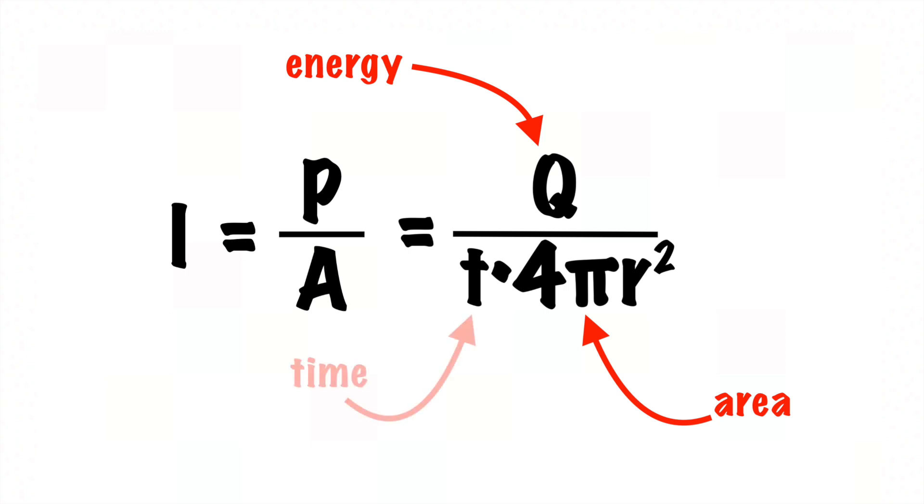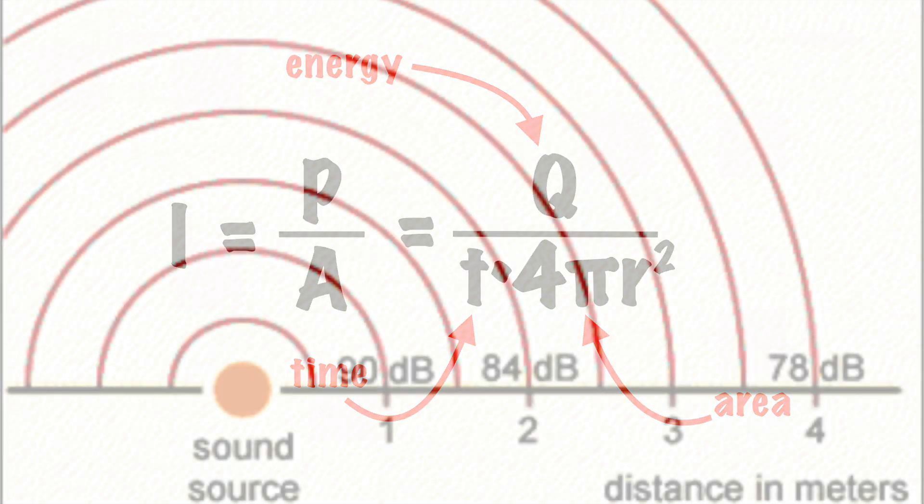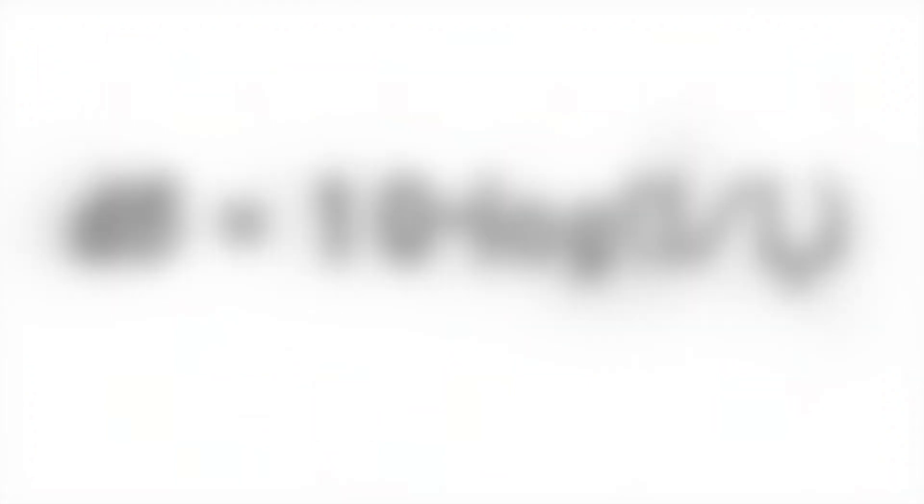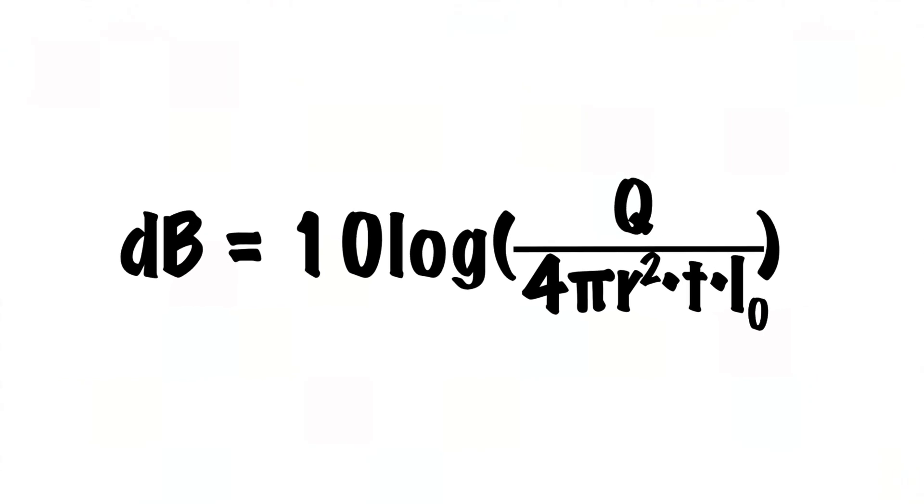Here we are using 4πr² for the area because sound spreads out spherically from a source, and 4πr² is the surface area of a sphere. So since this guy equals intensity, we're going to take it and plop it right into that other equation that we were working with.